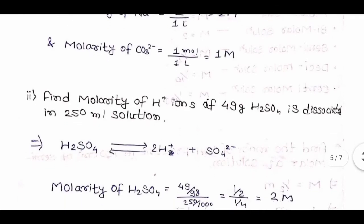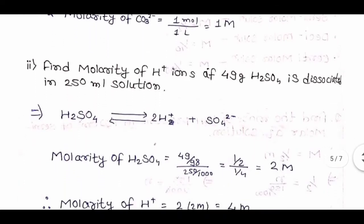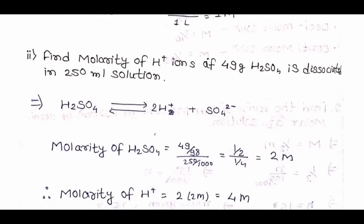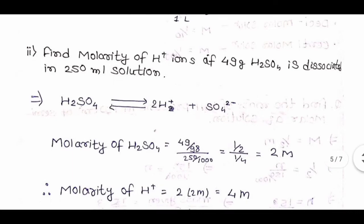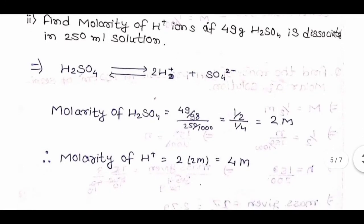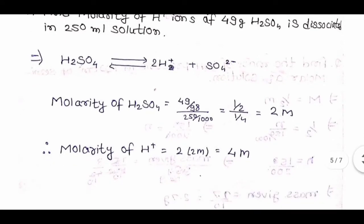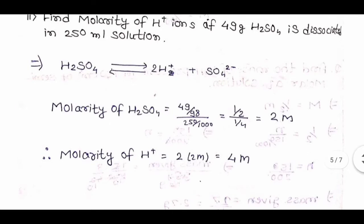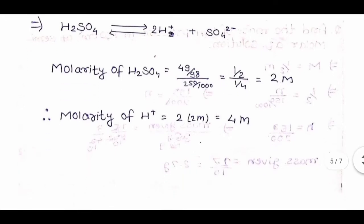Next question: find the molarity of H⁺ ion if 49 grams of H2SO4 is dissociated in 250 mL solution. H2SO4 breaks down into 2H⁺ + SO4²⁻. Moles of H2SO4 = 49/98 = 0.5 mol. Volume = 250/1000 = 0.25 L. Molarity of H2SO4 = 0.5/0.25 = 2 M. Therefore molarity of H⁺ = 2 × 2 = 4 M.